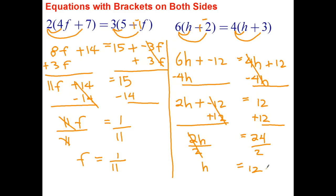Let's go ahead and check this one. See if the left side and the right side evaluate to the same value. So 12 subtract 2 is 10. 6 times 10 is 60. So the left side evaluates to be 60. 12 plus 3 is 15. 4 times 15 is also 60. So that does check.